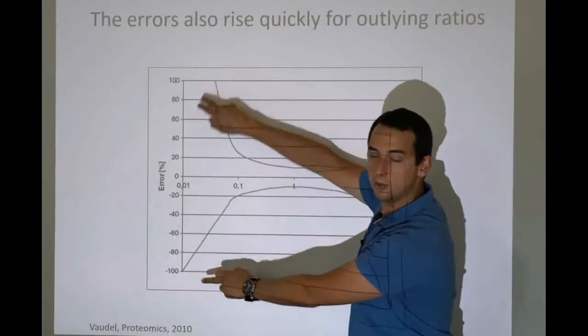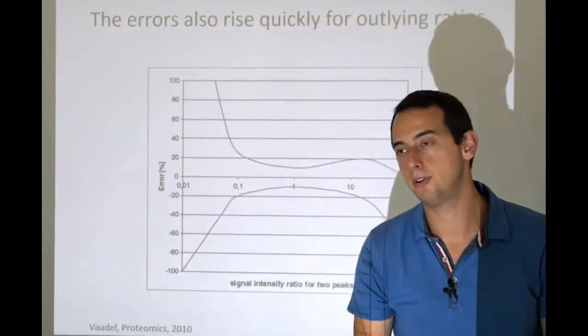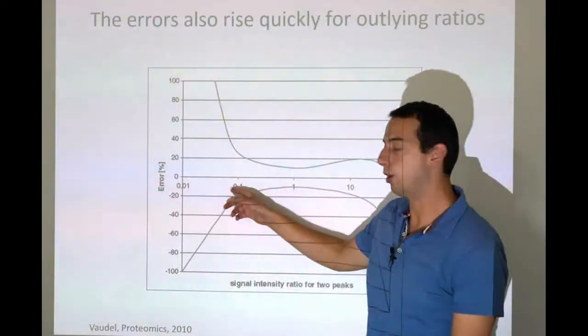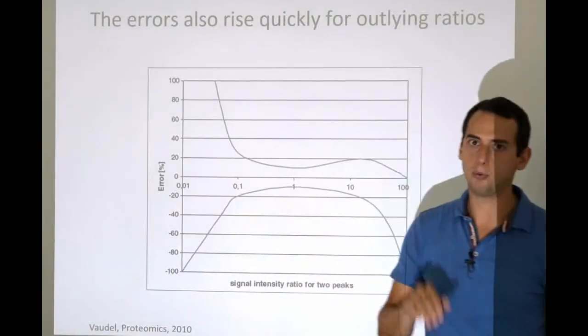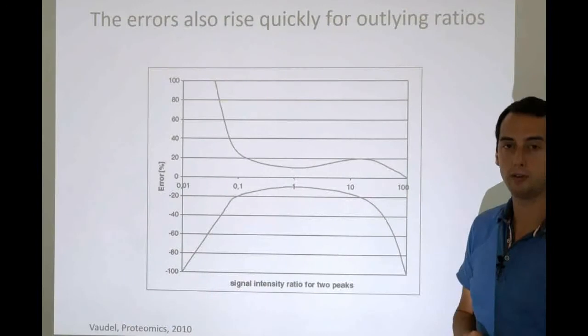We've seen that the previous graph went to here, and then you can see that it really balloons once you get outside of this range. So the error becomes huge. So the reliability of measuring something at less than 1 over 10 is going to go down really quickly. And the same thing goes for measuring something that is over 10 over 1.